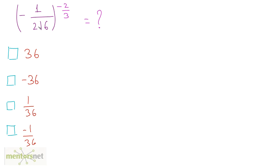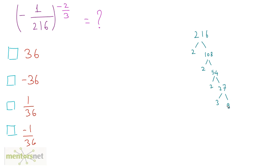Moving to the next question, let us represent 216 as a product of its prime factors. 216 divided by 2 gives 108. Continuing: 2 times 54, 2 times 27, then dividing by 3: 3 times 9 is 27, and 3 times 3 is 9. So 216 equals 2 cubed times 3 cubed.